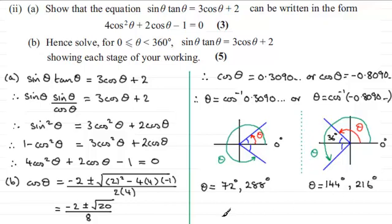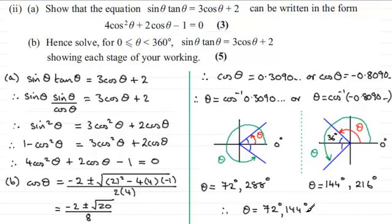Putting all values of theta in order of size: theta equals 72 degrees, 144 degrees, 216 degrees, and 288 degrees.